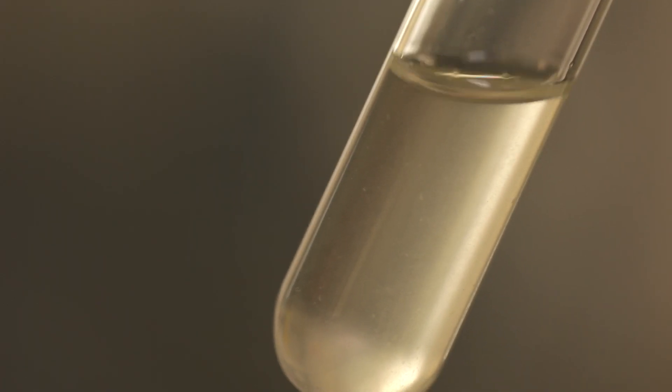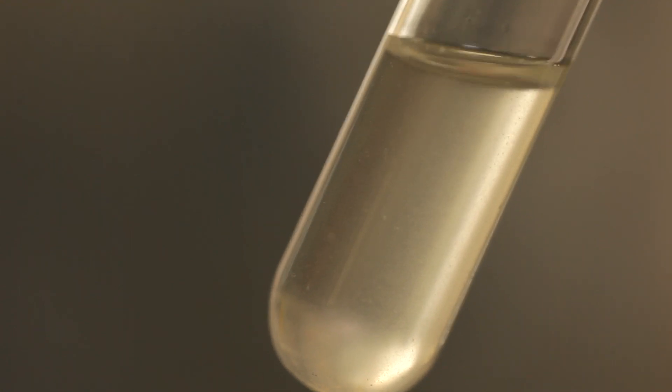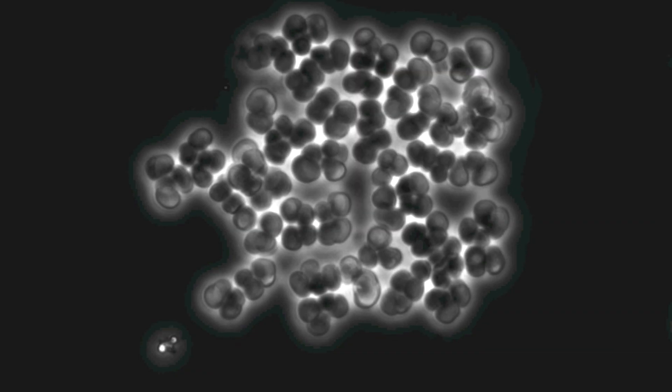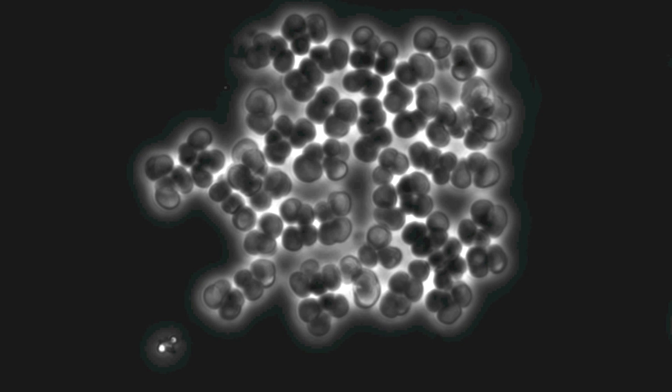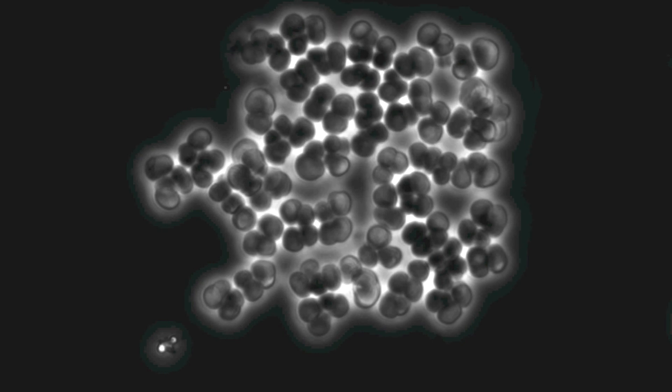This is what a methanogen monoculture looks like after we have successfully isolated it from its natural community. So of course these guys are responsible for all of the methane production in the cow, but they don't do it alone. They rely on an extensive network of other bacteria in a food web.